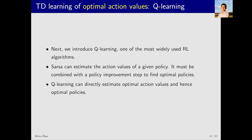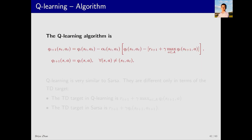Let's look at the Q-learning algorithm. It is very similar to the SARSA algorithm. First, looking at the second equation: if the state-action pair (s, a) is not visited, the Q value for this pair remains unchanged. For the current visited state-action pair (s_t, a_t), we update the Q value: Q_{t+1} equals Q_t minus alpha_t times Q_t minus the rest. Its structure is identical to SARSA except the TD target is different.